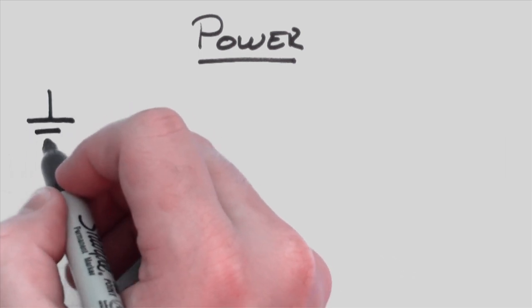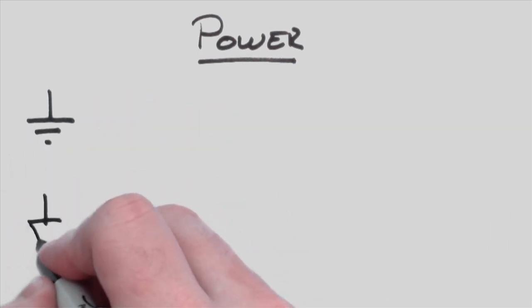The first symbol we'll look at is ground. There's really two common ways to draw it, either as a rake or as a triangle. These both mean ground.